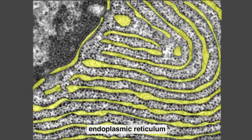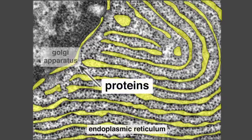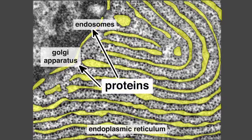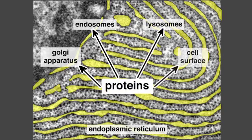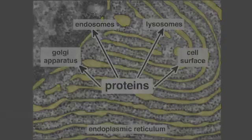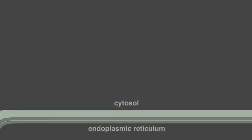The endoplasmic reticulum, or ER, is the most extensive membrane system in eukaryotic cells. Proteins transported to the Golgi apparatus, endosomes, lysosomes, and the cell surface all must first enter the ER from the cytosol.